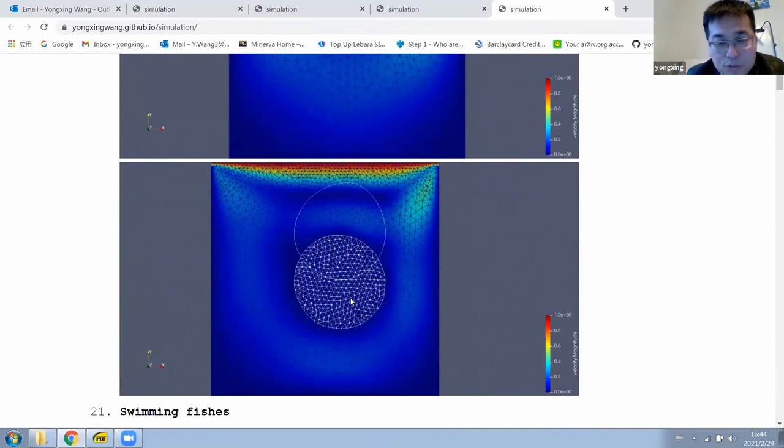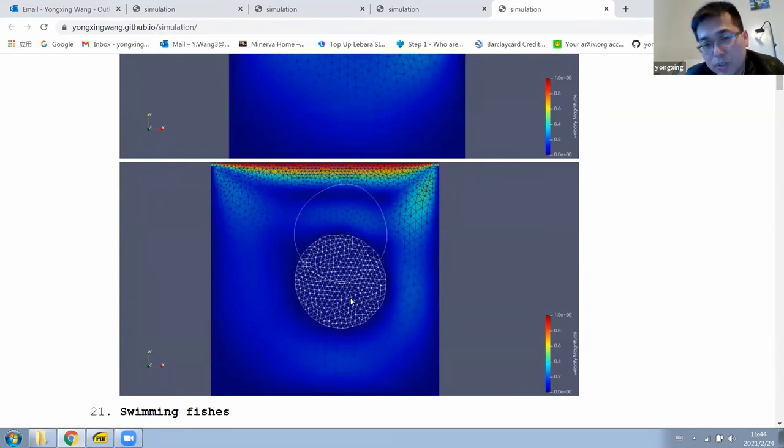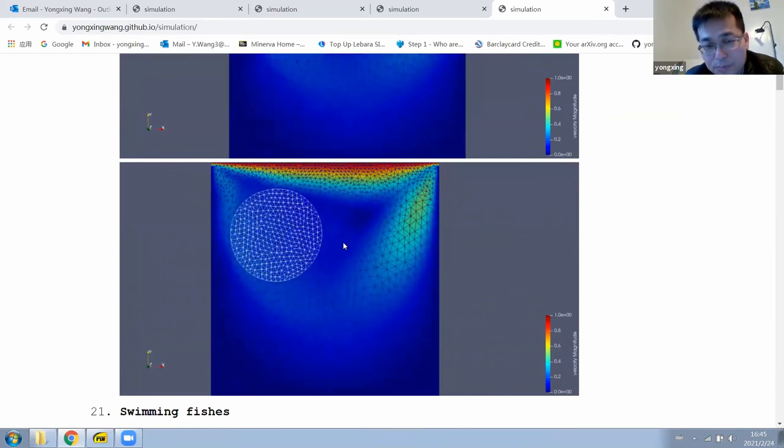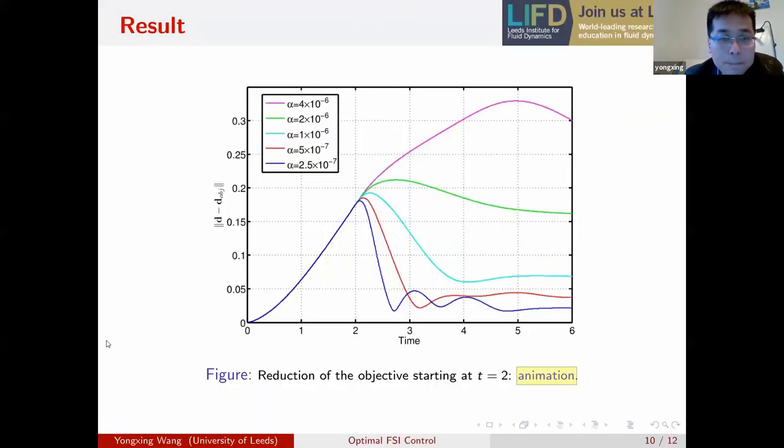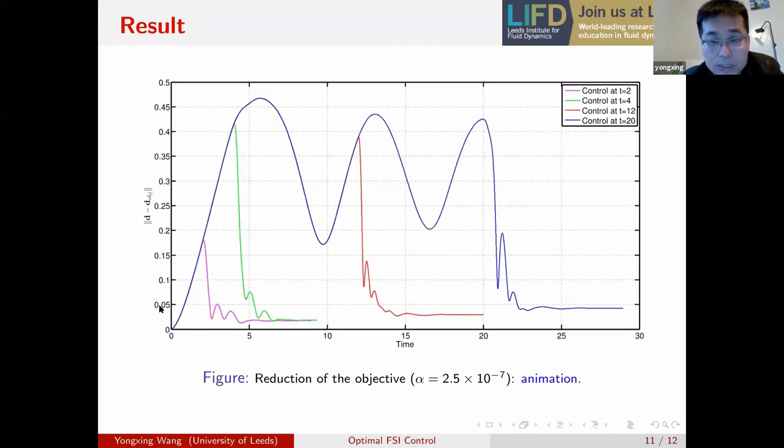Right. So the mesh, so the real physics, when I apply the forcing term, when I apply the control force. So the solid has been pulled back to the original position. And the circle here is the case without control. Okay. Great. And I also plot the reduction of objective function at different control points. We can pull back the solid at different times. And from this figure, we can see that it's successfully reduced. The objective function has been reduced about 80%. Okay.